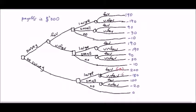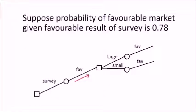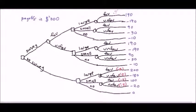For the branch no survey, the probabilities are the same as in the previous video. That is, probability of favorable market is 0.5 and probability of unfavorable market is 0.5. Suppose probability of favorable market given favorable result of survey is 0.78. We follow the branch conduct survey and choose favorable result, then continue along the branch until we get favorable market. Write down the probability of favorable market is 0.78.